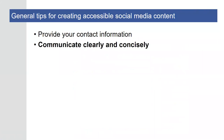Another general accessibility principle that applies across platforms is communicating clearly and concisely. You can enhance the accessibility of your social media content by writing in plain language — choosing words that are common and easy to understand, using clear short sentences and paragraphs, and writing in the active voice instead of the passive voice. Think about that journalistic style of writing: who, what, when, where, why — starting with the most important information first, then following with additional details.